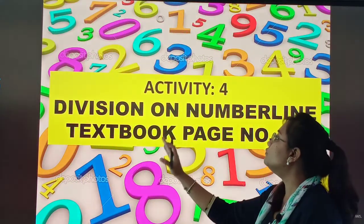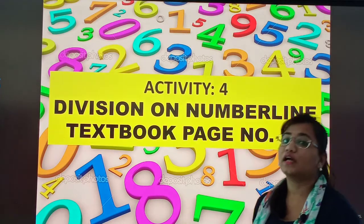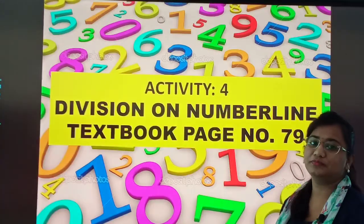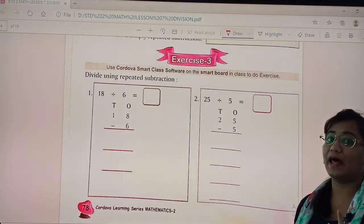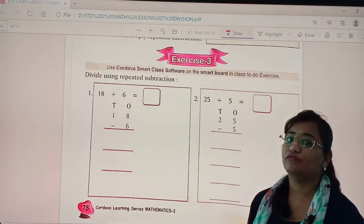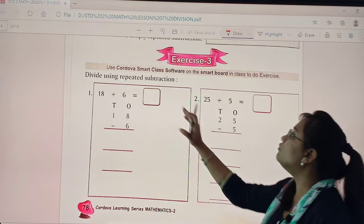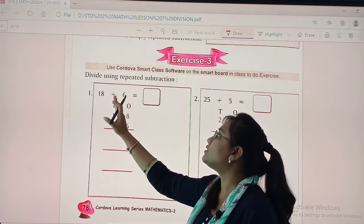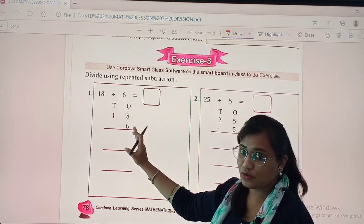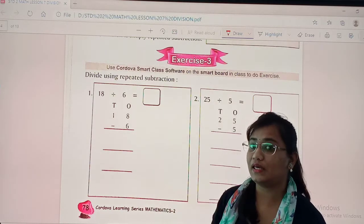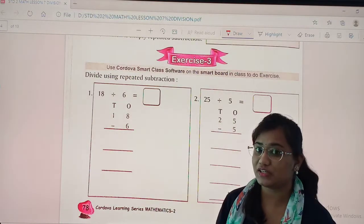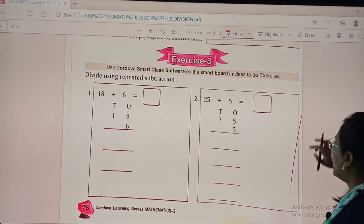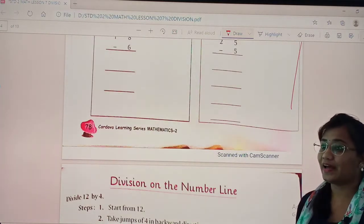Activity 4 division on number line. Now take out your textbook and open page number 79. So dear children before we start with activity 4, let's see exercise 3 which is a part of your activity 3. Division using repeated subtraction. We will subtract 18 by 6 and जब तक हमारा answer 0 नहीं आता तब तक हम 18 को 6 से minus करते जाएंगे.